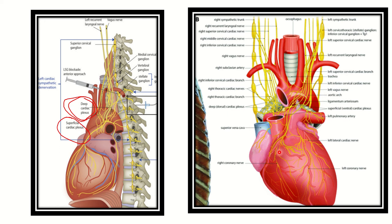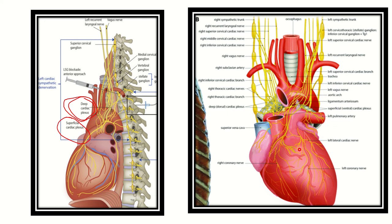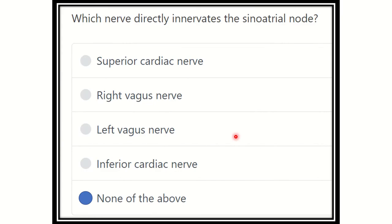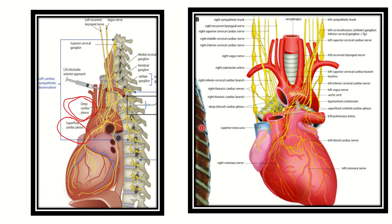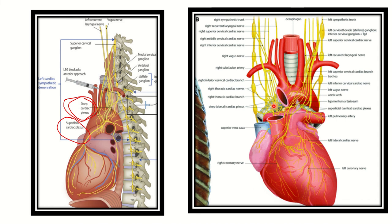The SA node gets its supply from this nerve, and we can see these are the plexus. This is the autonomic nerve supply to the heart. We can see the right and left vagus nerves form the superficial cardiac plexus and deep cardiac plexus. The heart does not get its supply directly from any single nerve — it actually gets supply from this plexus.